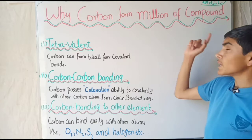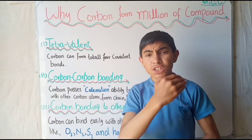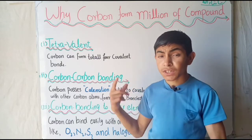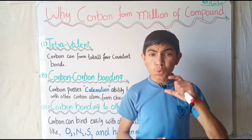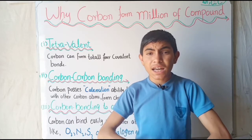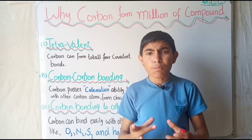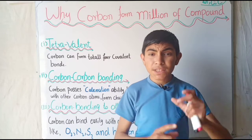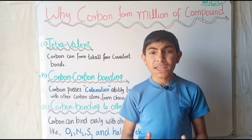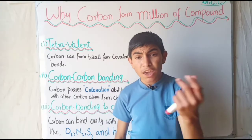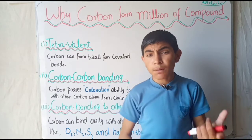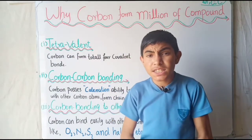Our topic is about why carbon forms millions of compounds. In the first lecture we studied that every organic compound is formed from the bonding of carbon. So what is the reason that organic compounds are a bonding product of carbon? Carbon is an element with atomic number six, but why does it form so many compounds? If we look at every organic compound, all of these are made of carbon.